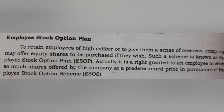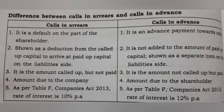Under the Employee Stock Option Plan, if a company has unpaid calls, some shareholders fail to pay the amount on allotment or call money — this is known as calls in arrears. The allotment and call money situation requires accounting treatment for the call in arrears scenario.